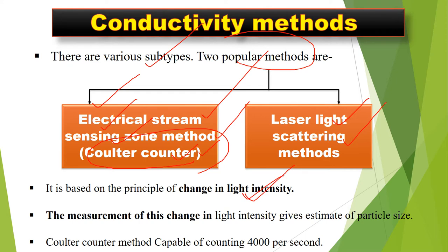The measurement of the change in light intensity gives an estimate of particle size. The coulter counter method is capable of counting 4,000 particles per second, making it an accurate, sensitive, and fast technique.